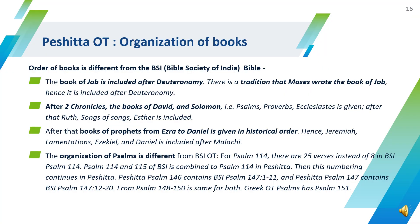The order of books in the Peshitta Bible is different from the commonly used Bible. The books are mostly arranged in chronological order. The Book of Job is included after Deuteronomy, based on the tradition that Moses wrote it. After 2nd Chronicles, the books of David and Solomon — i.e., Psalms, Proverbs, Ecclesiastes — are given, followed by Ruth, Song of Songs, and Esther. This is followed by books of prophets from Ezra to Daniel in historical order. Hence, Jeremiah, Lamentations, Ezekiel, and Daniel are included after Malachi. The organization of Psalms is also different.